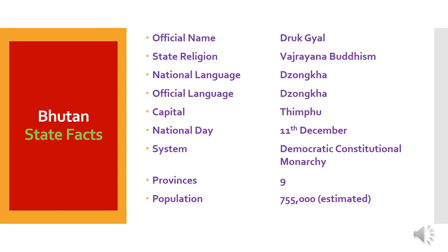Here are some facts about Bhutan. Official name: Druk Yul. State religion: Vajrayana Buddhism. National language: Dzongkha. Official language: Dzongkha. Capital: Thimphu. National day: 11th December. System: Democratic Constitutional Monarchy. Provinces: 9. Population: 755,000, estimated.